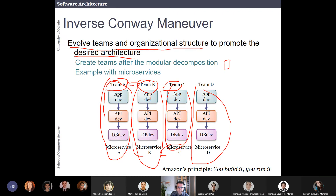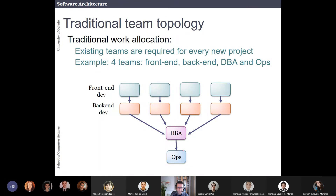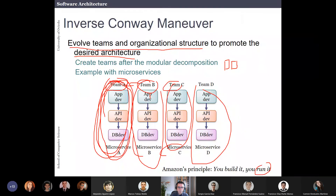There is a principle at Amazon: 'you build it and you run it.' The team developing microservice A is also the team running it. Notice that in this structure there is no dedicated operations team — instead, all developers have some knowledge of operations. This is called DevOps, and this structure goes hand in hand with DevOps. This is the Inverse Conway Manoeuvre.